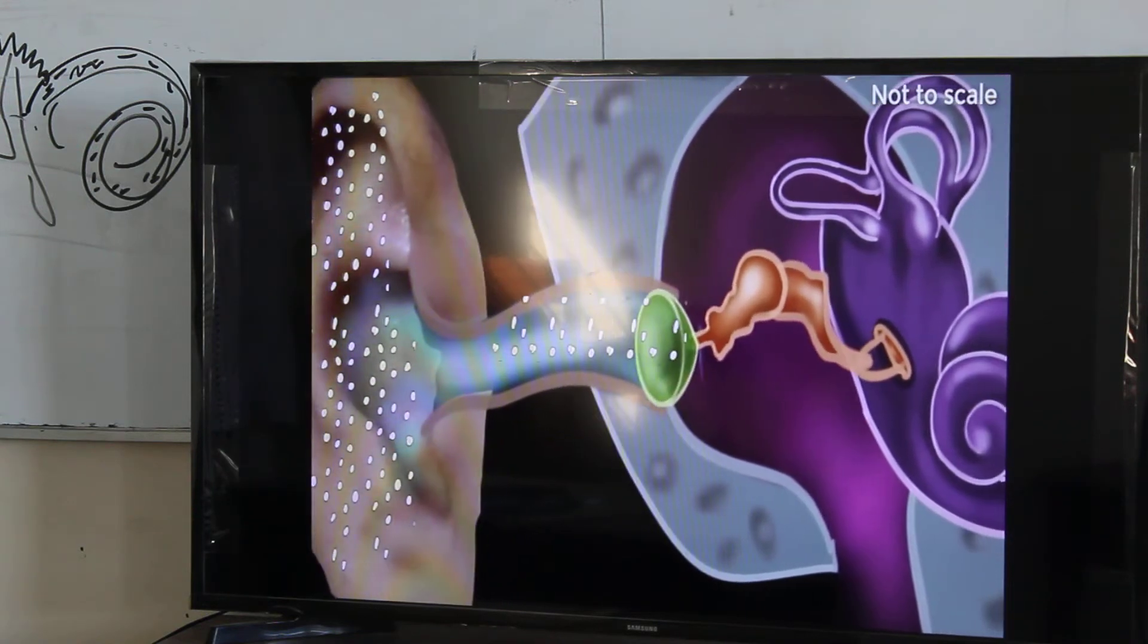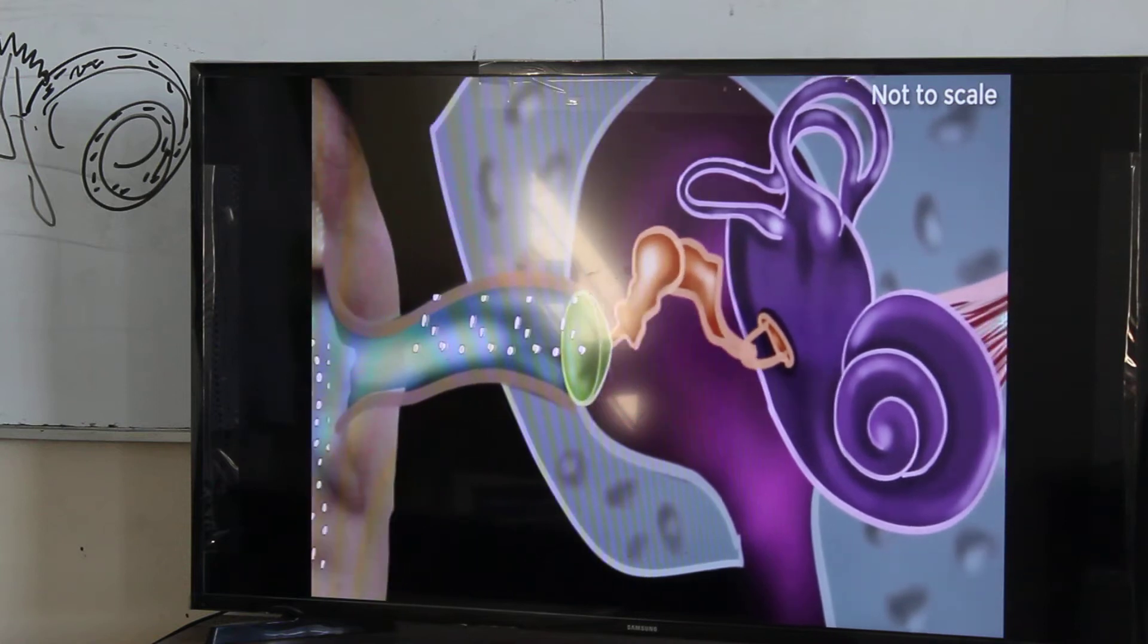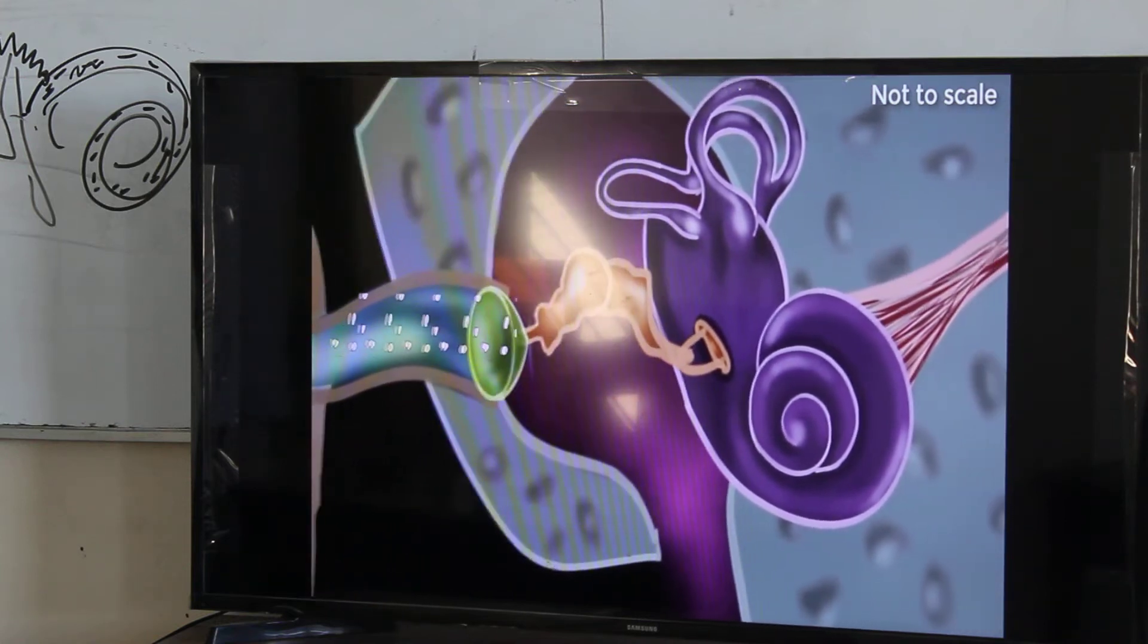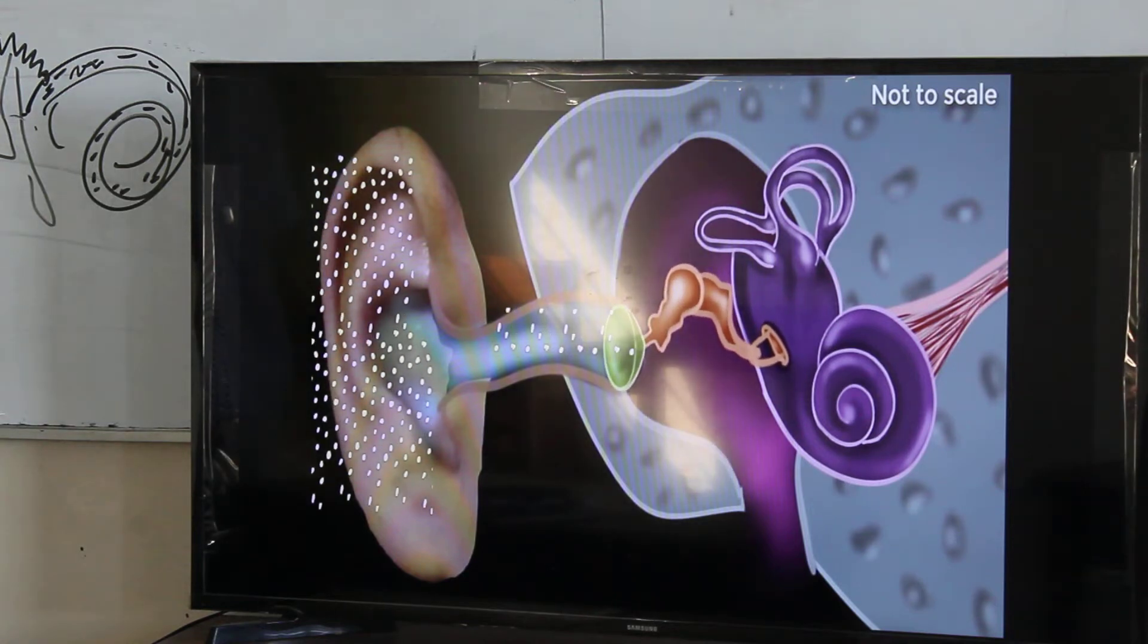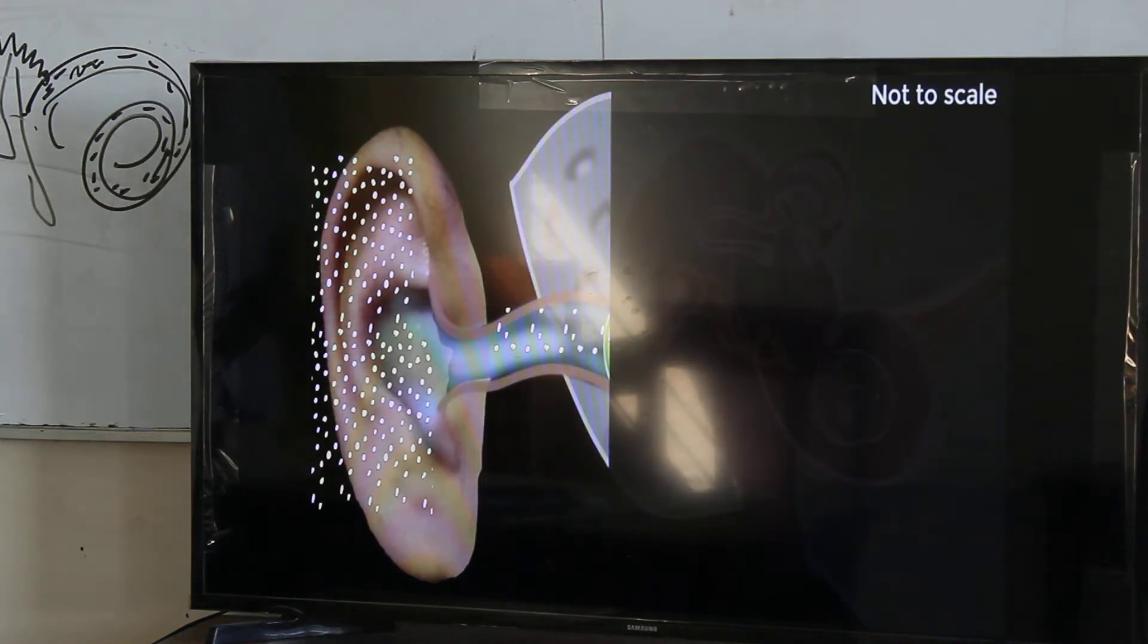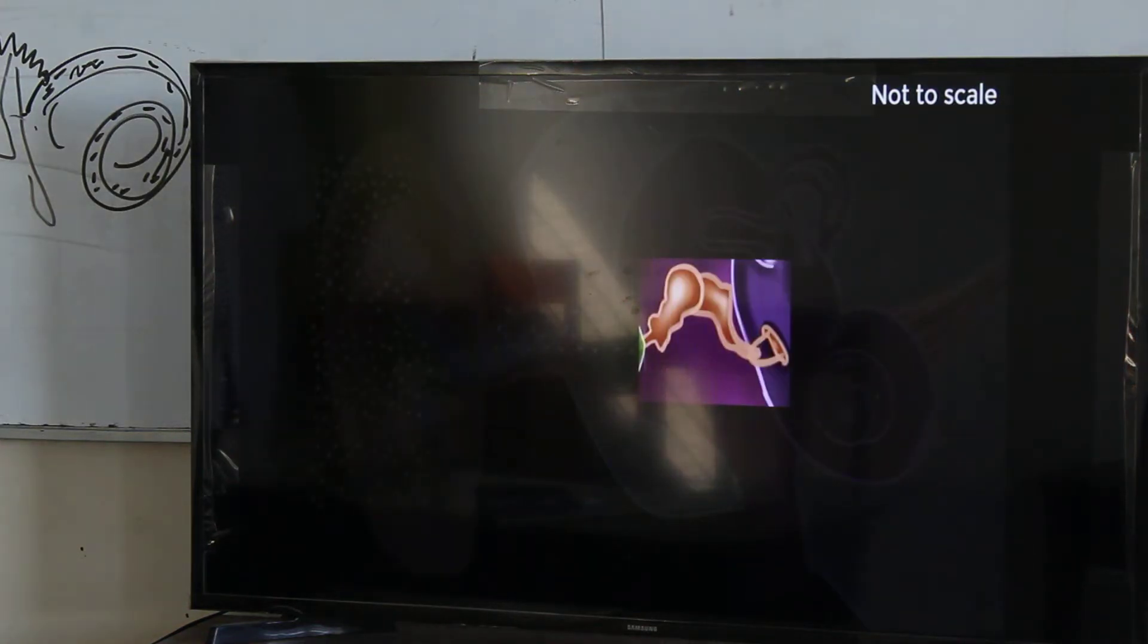So let's look at how the different parts of the ear work together to make us experience sound. Our ear can be divided into three parts. The outer ear, the middle ear and the inner ear.